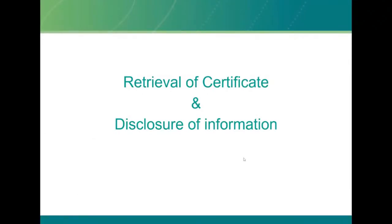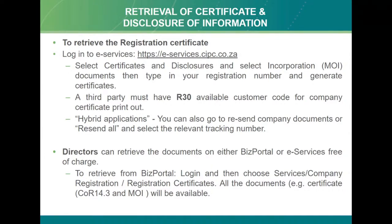A few weeks ago there was a challenge where customers did not receive their documents. If you don't receive your documents, it's easy to go back to certificates and disclosures on e-services to request them again. To retrieve a registration certificate: as soon as you've registered a company, you will receive the registration document, the MOI incorporation documents, and the welcome letter. Should you not receive them or require them again, you can request them from e-services.